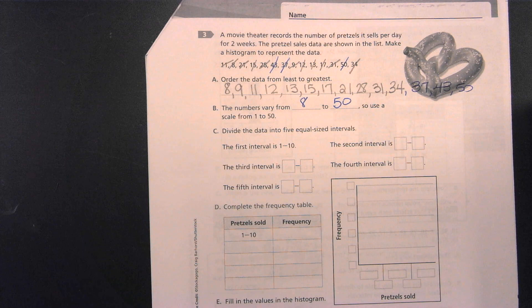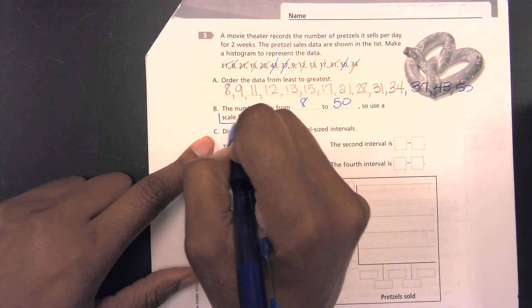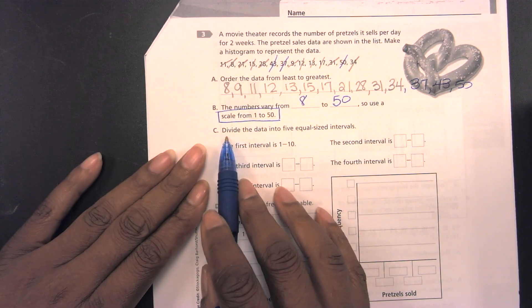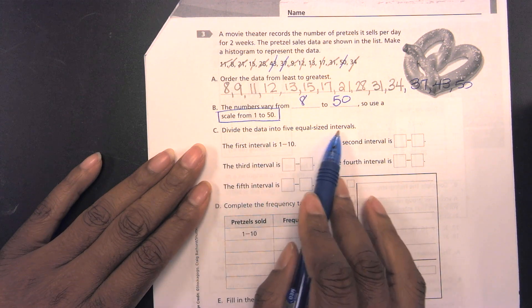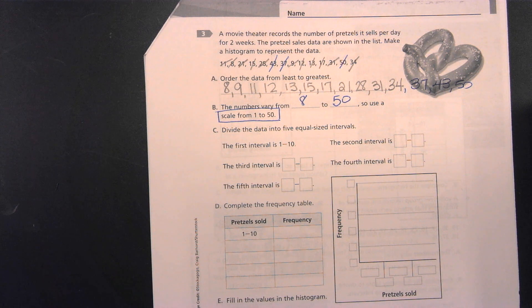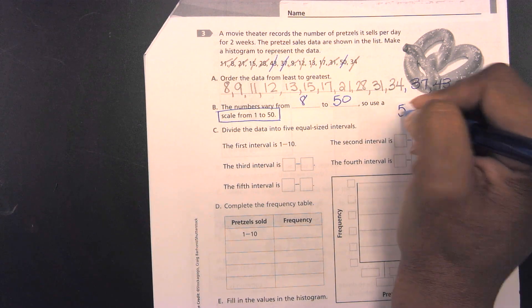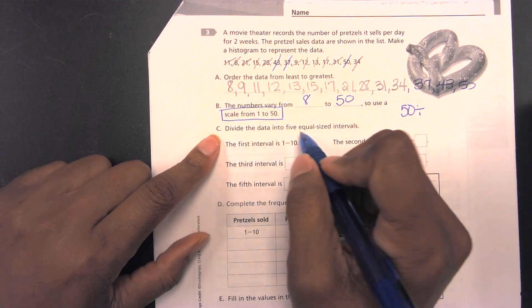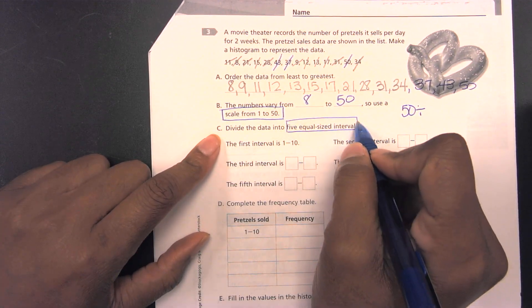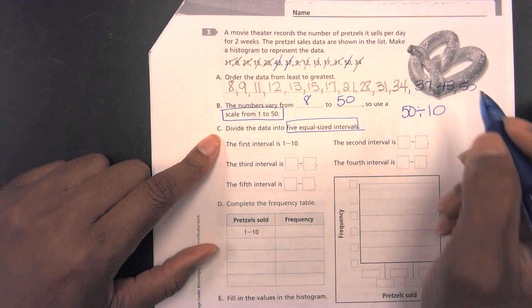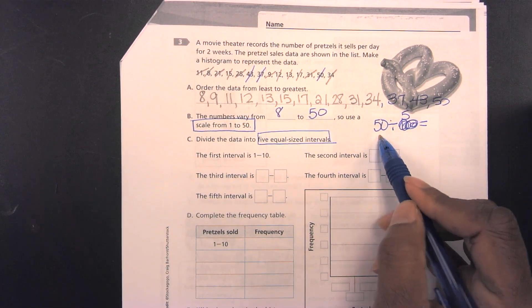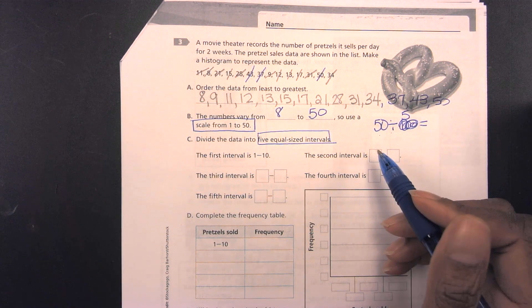So, then it goes on to tell you, hey, you need to be a scale of 1 to 50. That is what your scale needs to be. Then, for C, it says, divide the data into 5 equal size intervals. So, my question to you all is, what's the highest number we're using on our scale? So, we're going to take that 50, and we're going to divide it by 5 because they want us to divide the data into 5 equal intervals. So, 50 divided by 5 is going to give us 10.